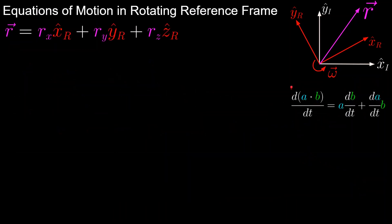We'll start by defining our scenario, where we have an inertial frame in white with unit vectors x_i and y_i, a rotating reference frame in red with some angular velocity omega, and a position vector in magenta. And even though this diagram is in two dimensions, we will be going over the equations in three dimensions, and everything will still apply to this scenario.